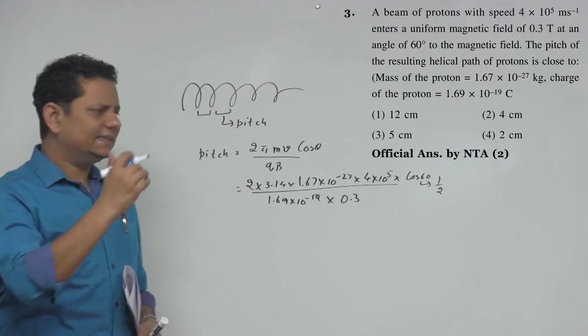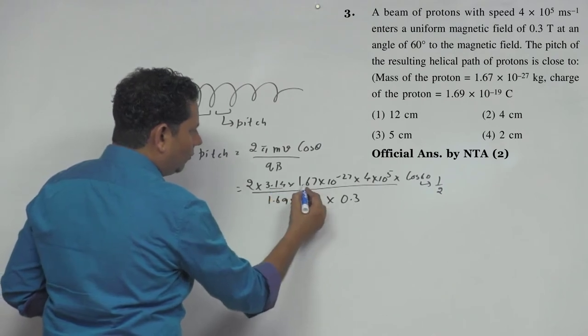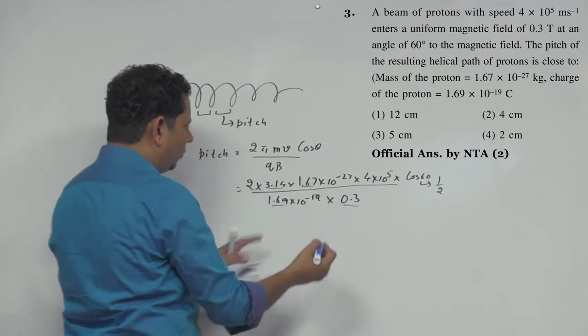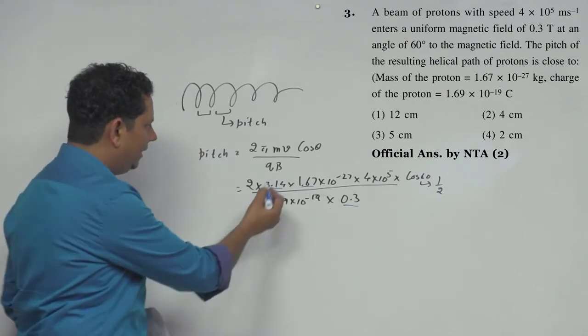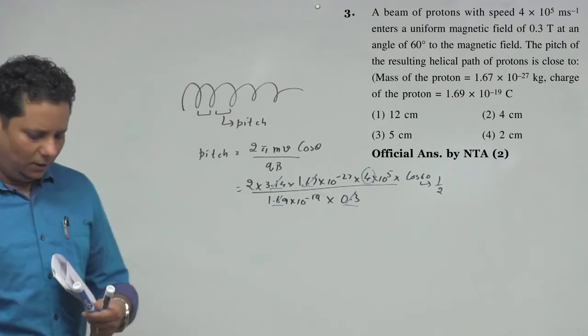Now, if we multiply 3.14 and 1.67, we can simplify. You can safely cancel terms because there will be significant cancellation.